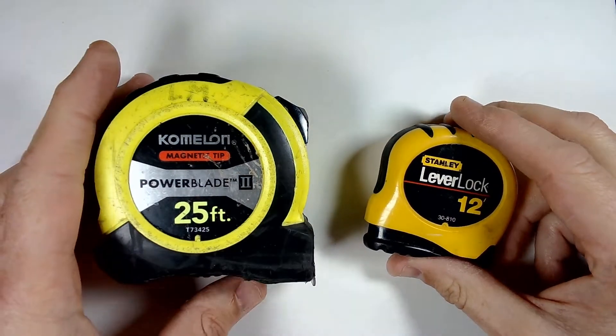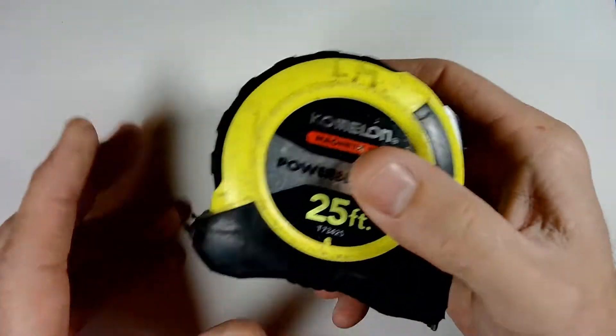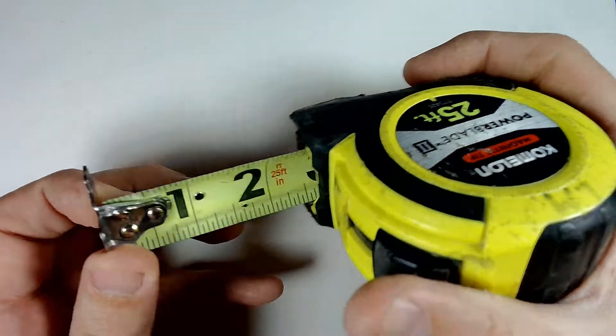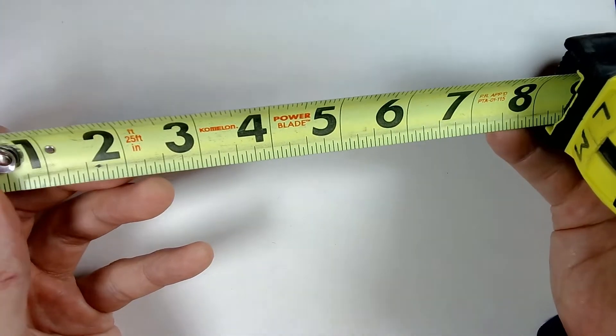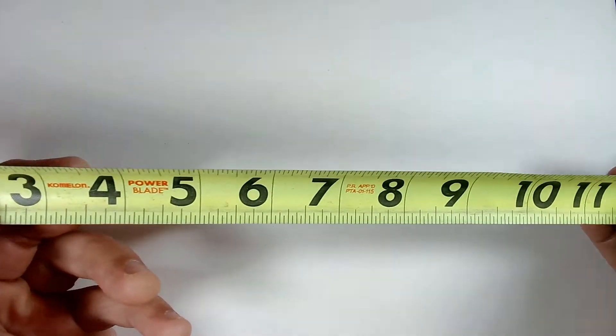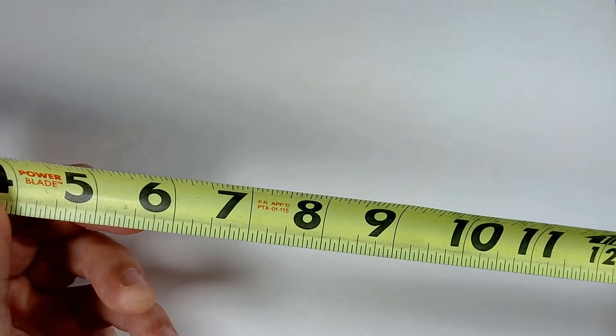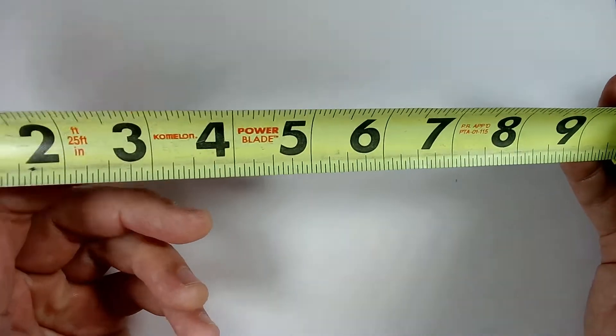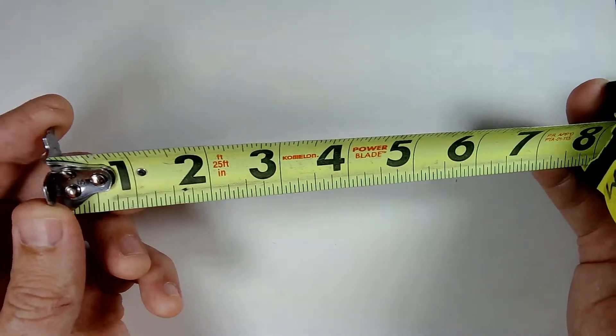So how do you use a tape measure? Even though they look different, most of these are going to be similar. Our scale should be the same. It's measuring in the inch-foot scale. Sometimes you'll have metric along the bottom, but most of mine do not.